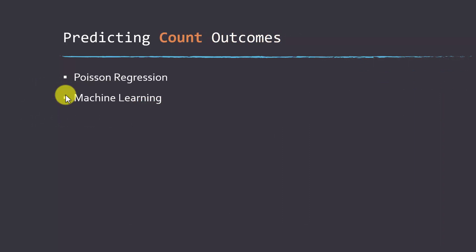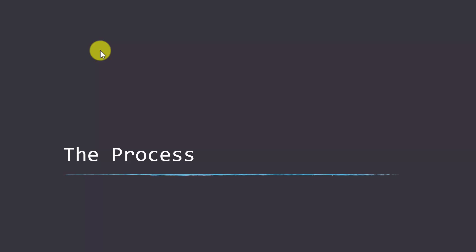You can also predict counts. For example, an epidemiologist might be interested in predicting the occurrence or likelihood of a disease within a specific region, where the output would be something like 20 cases. That can be done with machine learning and Poisson regression methods. We won't look at count predictions in depth here, but it's worth noting as another option. We'll stop here in this first section, and in the next section we'll step through the process of doing supervised machine learning.